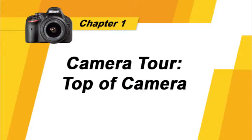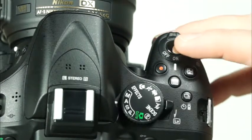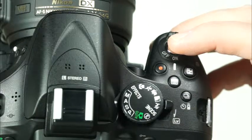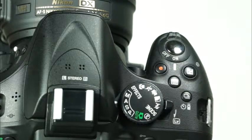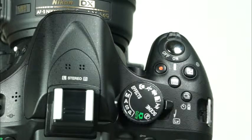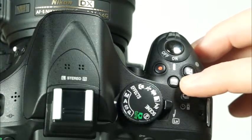Your D5200 has many sophisticated buttons and dials. To take the best pictures with your camera, you'll want to be familiar with the functions of each of them. Let's begin by taking a closer look at many of the camera's features. First there is the power switch and shutter release button. To take a picture, simply press and hold the shutter button halfway down for a moment, allow the camera to focus, and press it the rest of the way down to take the picture. This is the movie record button, the exposure compensation button, and the information button.